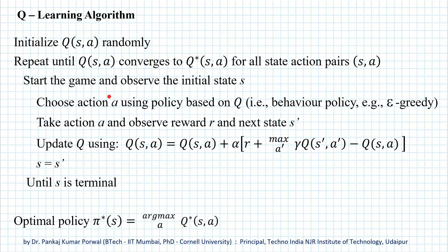The agent chooses an action A based on its behavior policy. The behavior policy for Q-learning is normally the epsilon-greedy policy because it balances between exploration and exploitation. After taking action A, the agent observes the immediate reward R and transitions to the next state S'. With knowledge of this immediate reward R and the next state S', it updates its estimate for the Q-value for state S and action A using the Q-learning update equation.